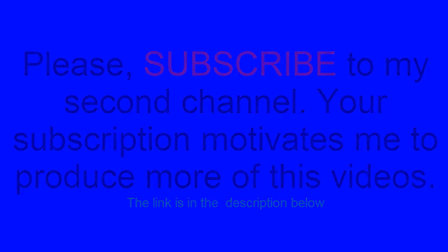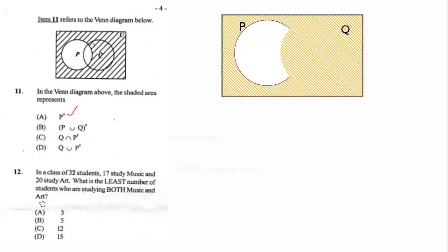Next question: In a class of 32 students, 17 students study music and 20 study art. What is the least number of students who are studying both music and art?